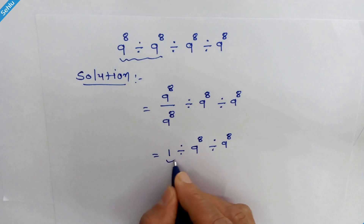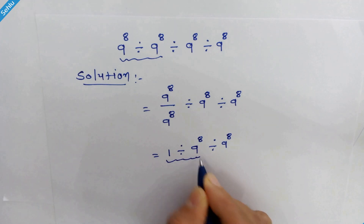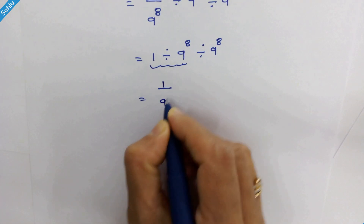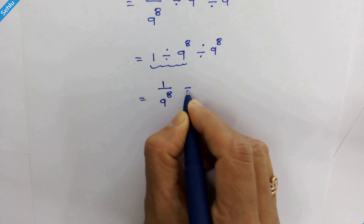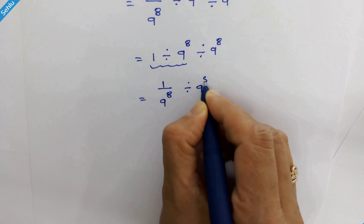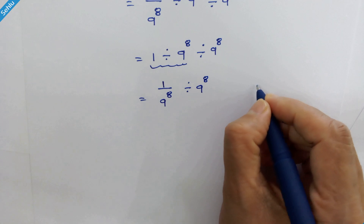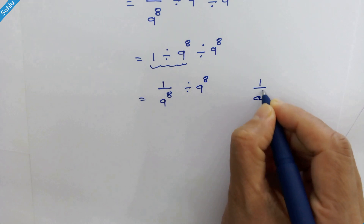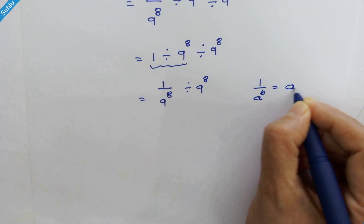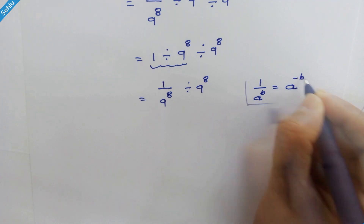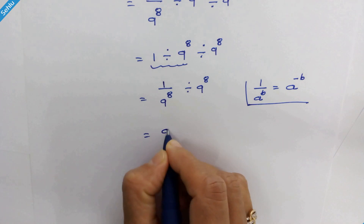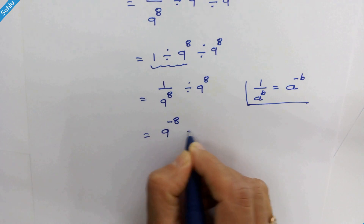Now let's work on these two. It can be written as 1 upon 9 raise to 8, divide by 9 raise to 8. Now let's recall this rule: if we have 1 upon a raise to b, then it will be a raise to minus b. So this part can be written as 9 raise to minus 8.